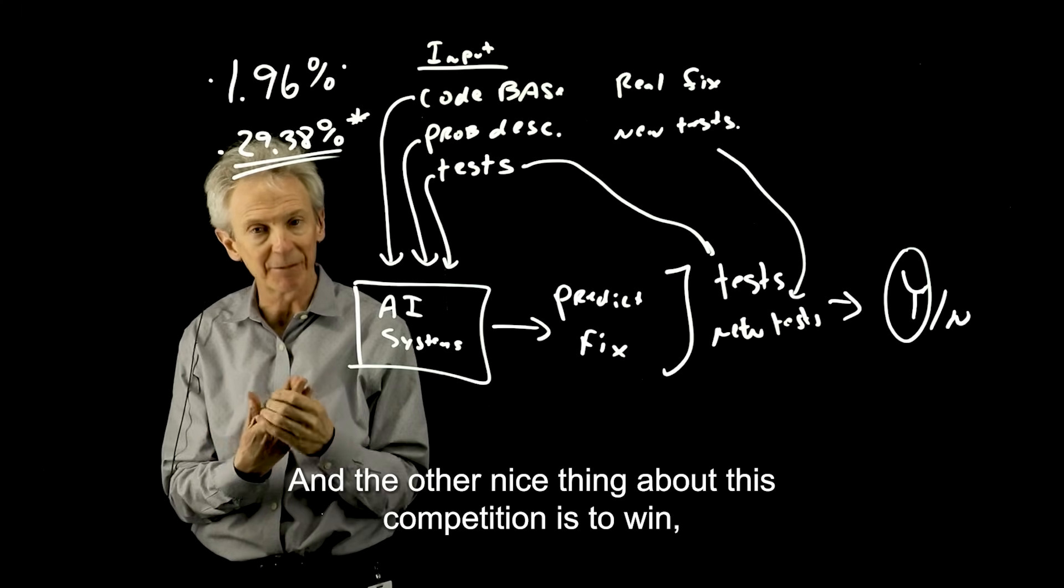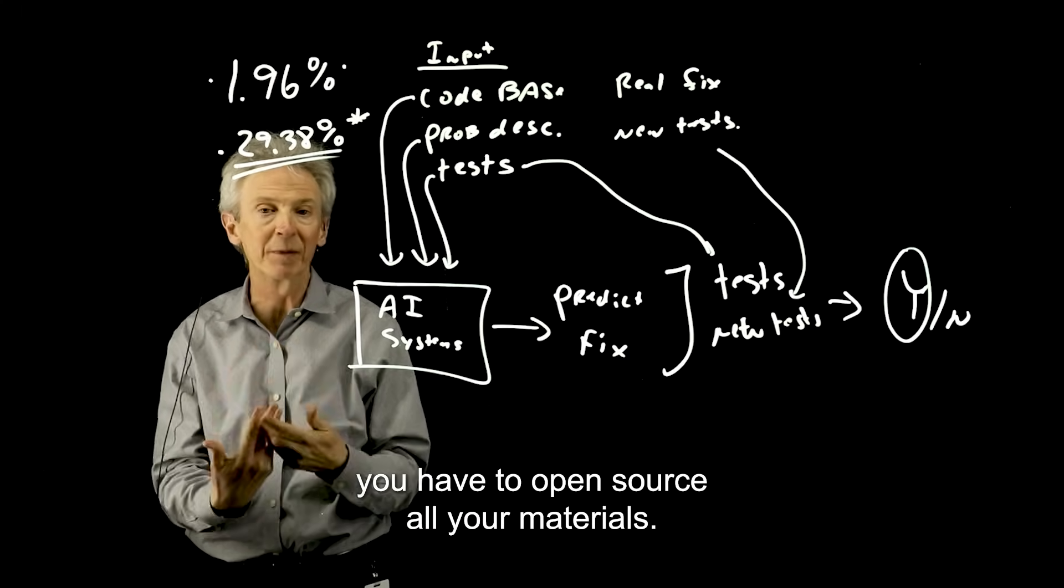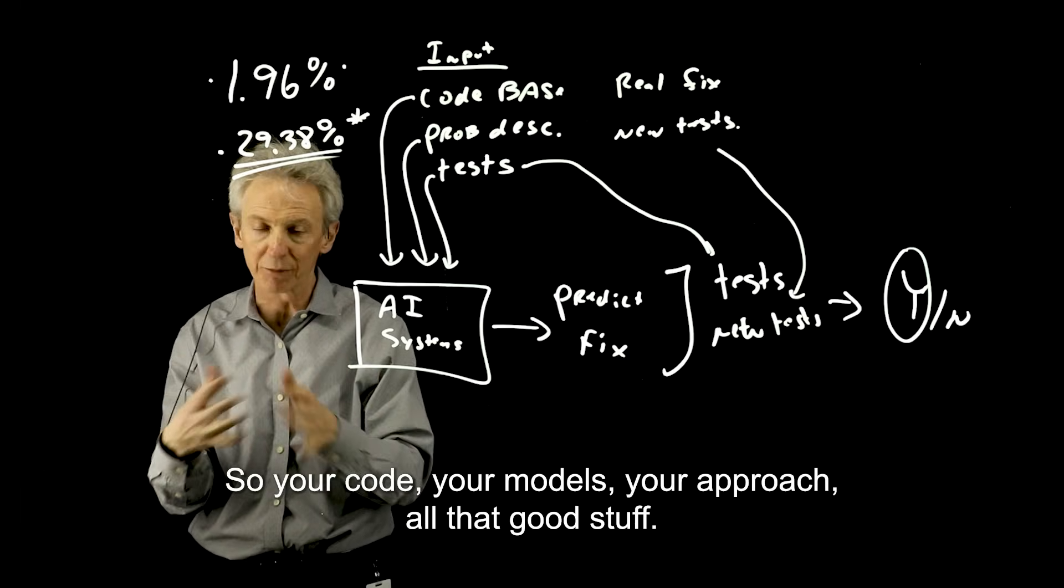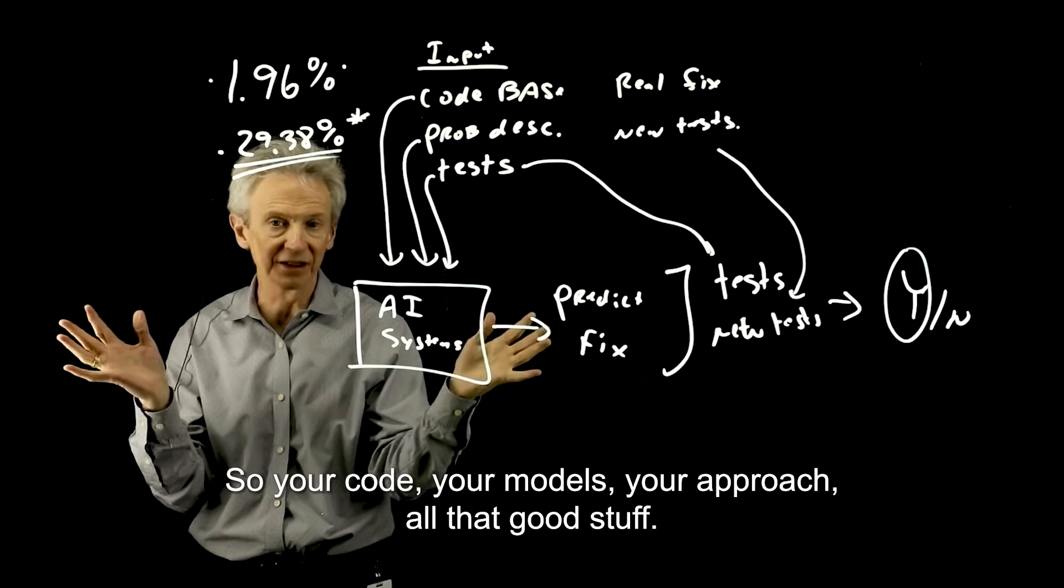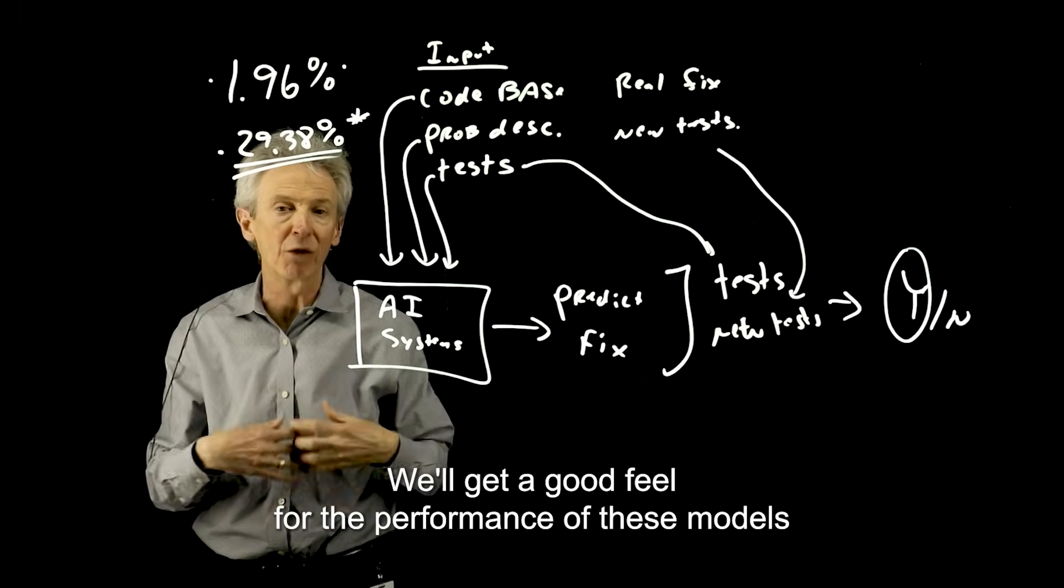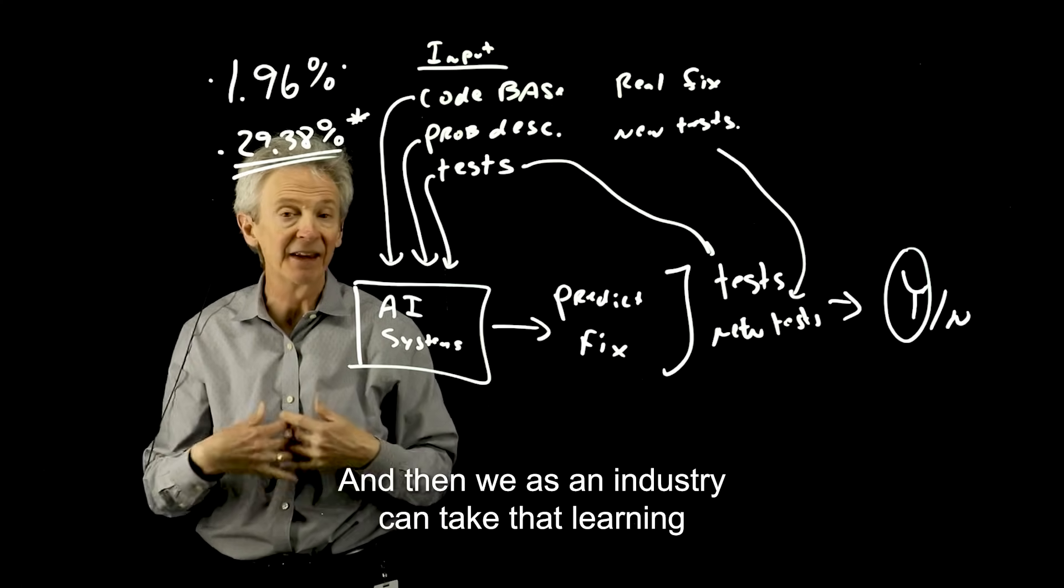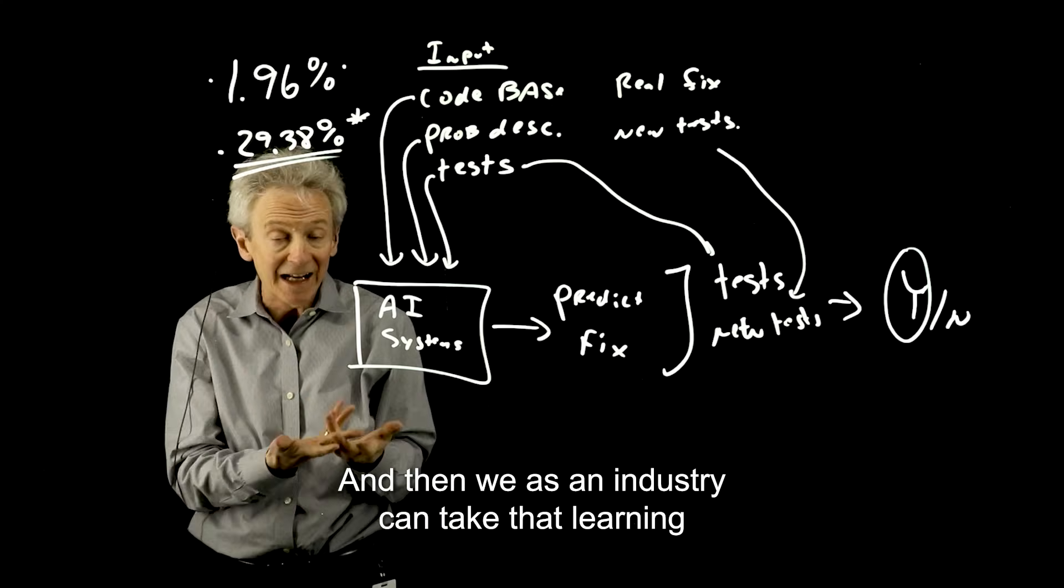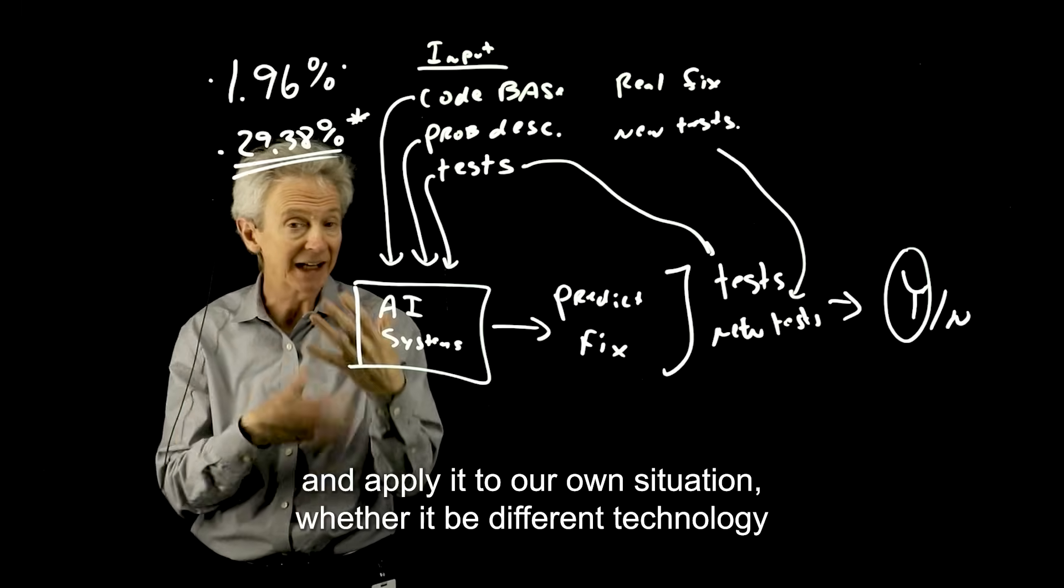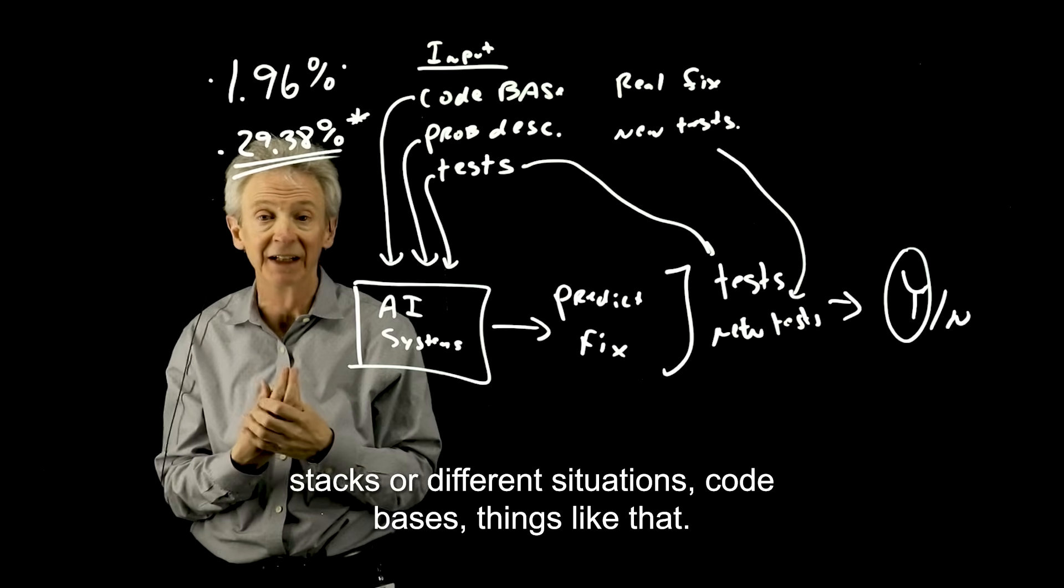And the other nice thing about this competition is to win, you have to open source all your materials. So your code, your models, your approach, all that good stuff. So everything will be open sourced in June. We'll get a good feel for the performance of these models that are automatically fixing bugs. And then we as an industry can take that learning and apply it to our own situation, whether it be different technology stacks or different situations, code bases, things like that.